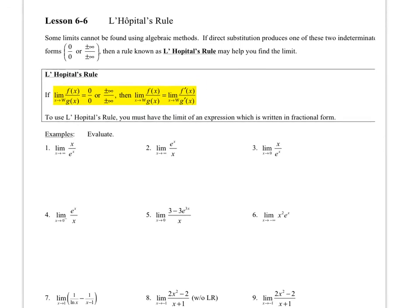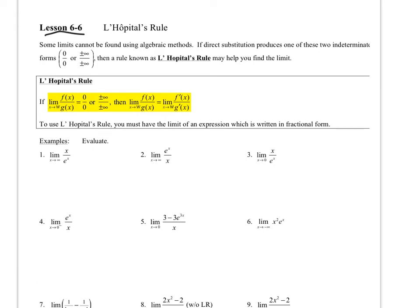This is lesson 6.6 in Taylor-Shaw. We're doing extended calculus: L'Hopital's Rule. Some limits can't be found by algebraic methods. If the limit is in the indeterminate form 0 over 0 or infinity over infinity, L'Hopital's Rule may help you find it. The limit of a rational expression will be the same as the limit after taking the derivative of the numerator and the derivative of the denominator separately, placing them in their respective positions.